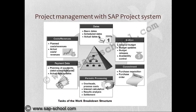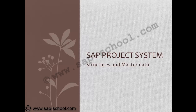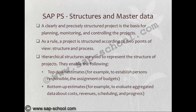Now we will discuss in detail each phase of the project system. Starting with the first phase: structures and master data. As a rule, a clearly and precisely structured project is the basis for planning, monitoring, and controlling projects. A project is typically structured according to two points of view: structure and process.